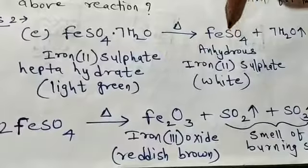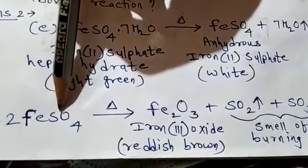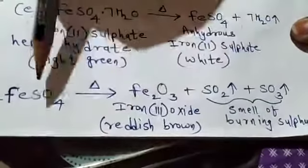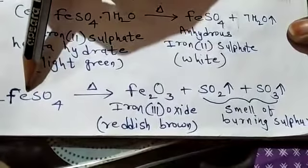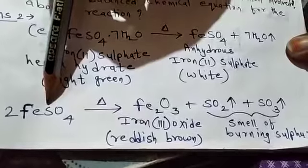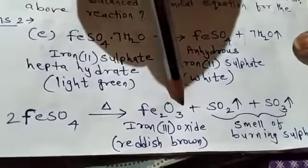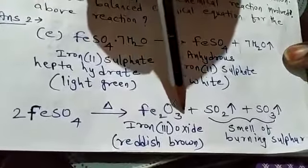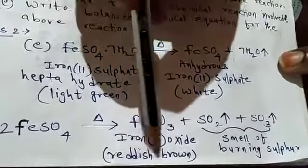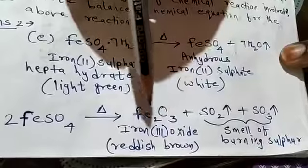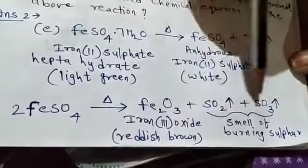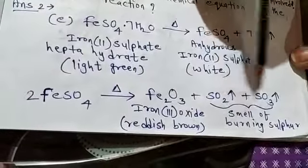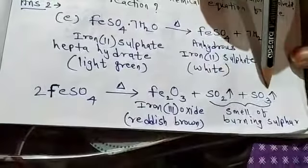If you continue heating, this white colored substance changes to reddish brown. The ferrous sulfate, on further heating, decomposes into Fe₂O₃ — iron(III) oxide, also called ferric oxide — because in this formula, iron uses valency 3. Two gases are also evolved having the smell of burning sulfur: sulfur dioxide and sulfur trioxide.